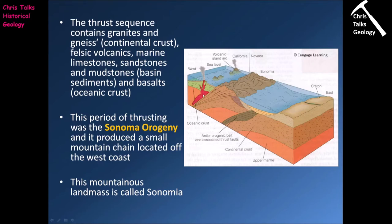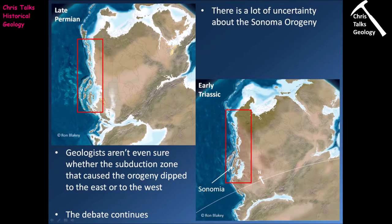This period of thrusting and crustal thickening produced a mountain range referred to as the Sonoma orogeny — a mountain-building event. It produced a relatively small mountain chain off the west coast of North America. After the collision, the Sonoma microcontinent sat adjacent to North America with a narrow body of water underlain by continental crust between them. The mountainous terrain that formed is called Sonomia. The basin that had formed off the western coast was destroyed as the oceanic crust was consumed, leading to the orogeny.